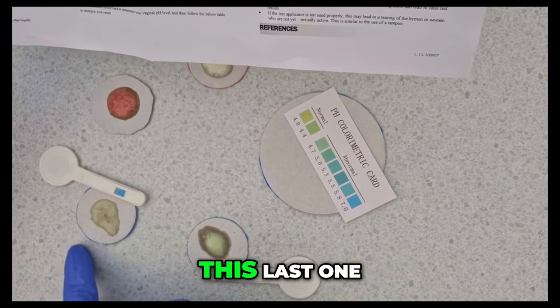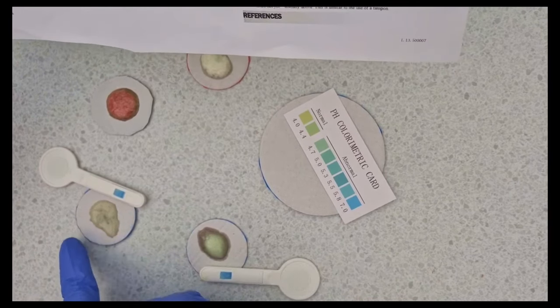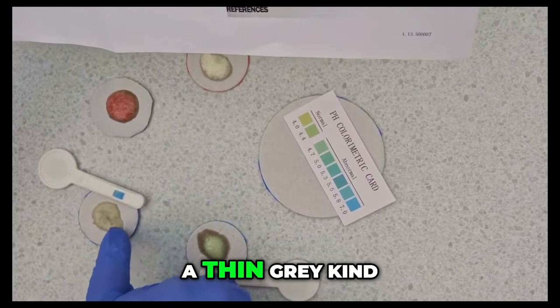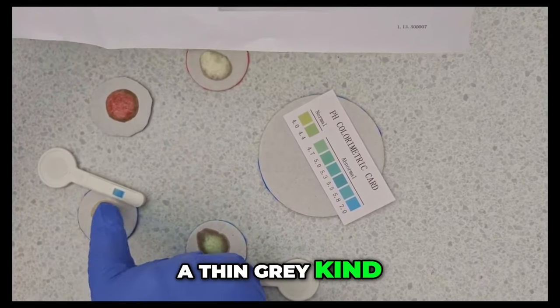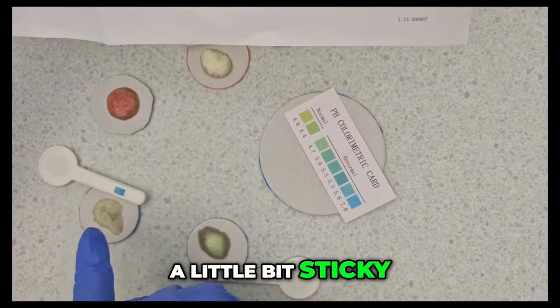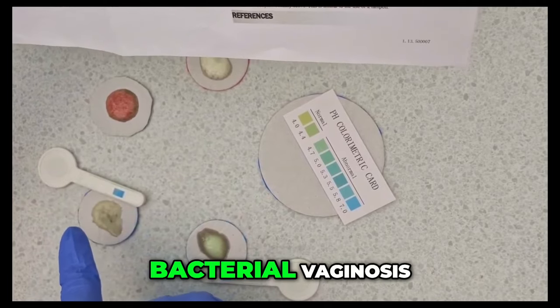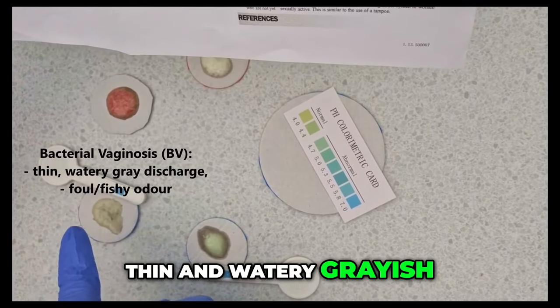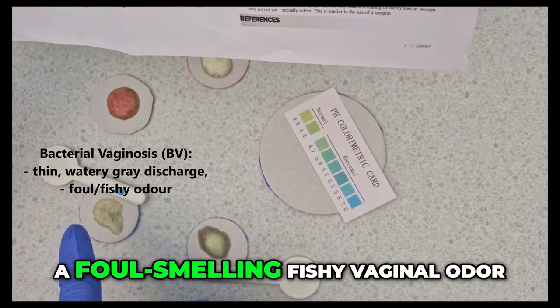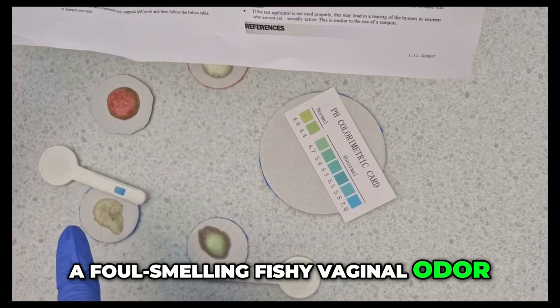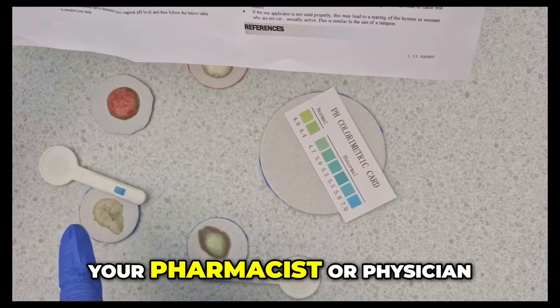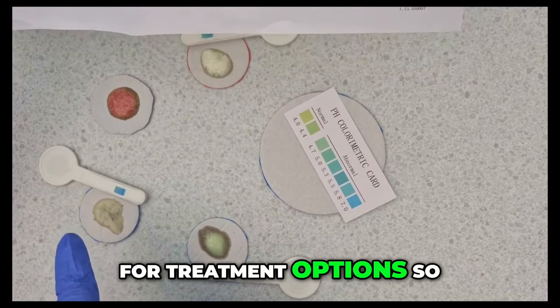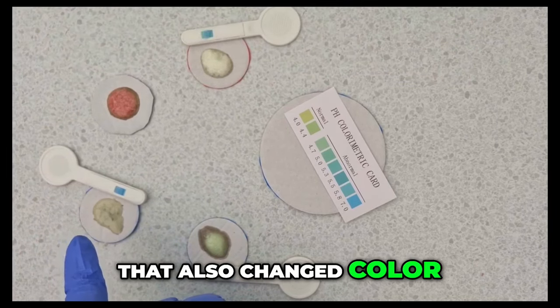And let's look at this last one. So this last one is kind of like a thin grey sort of grey kind of discharge. A little bit sticky. But this one is bacterial vaginosis. Thin and watery greyish white vaginal discharge with the foul smelling fishy vaginal odor. And that's BV. Speak to your pharmacist or physician for treatment options. So that also changed color.